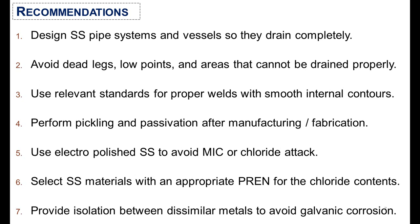A few recommendations must be followed when designing SS piping systems and vessels: ensure they can completely drain during process shutdown; avoid dead legs, low points, and areas that cannot be properly drained; use relevant standards for proper welds with smooth internal contours; perform pickling and passivation after manufacturing and fabrication; use electropolished SS to avoid microbiologically induced corrosion or chloride attack; select SS material with an appropriate PREN for the chloride content; and provide isolation between dissimilar metals to avoid galvanic corrosion.